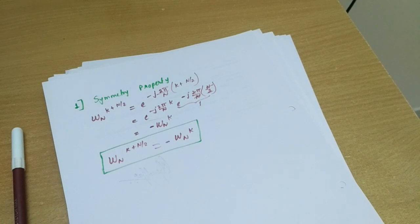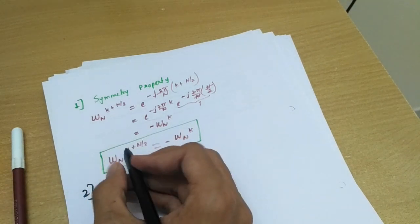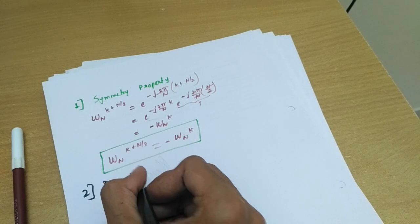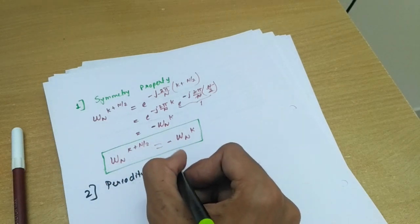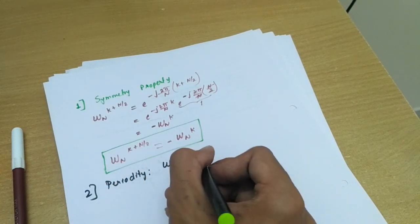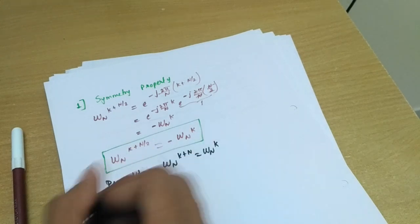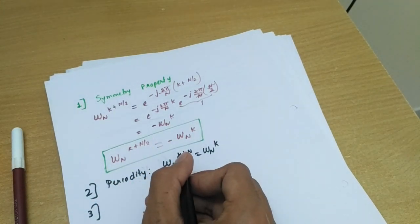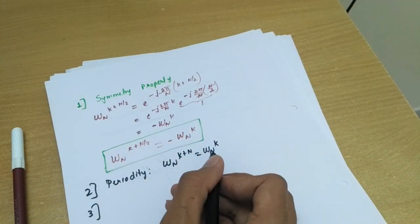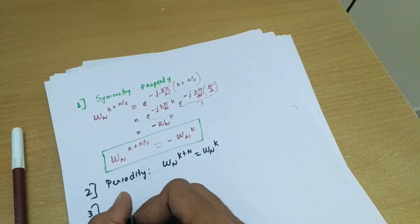Now the second one which is periodicity property, I am not proving it. Simple, for N-point DFT we have W_N raised to k plus N is nothing but W_N raised to k.